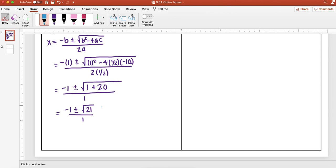And then now from here, I'm going to go ahead and split this apart. So this plus or minus means I can either have negative 1 plus the square root of 21 over 1, or I can have negative 1 minus the square root of 21 over 1. So you notice everything's the same. It's just that middle part, I have a plus, and the other one, I have a minus.